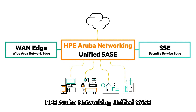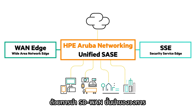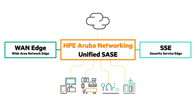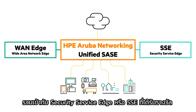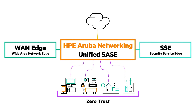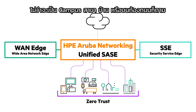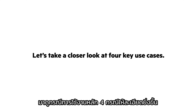HPE Aruba Networking Unified SASE takes SASE to the next level, bringing together our industry-leading SD-WAN with our award-winning Security Service Edge, or SSE, to extend Zero Trust security controls to all people and devices, no matter from where they connect — whether campus, branch, home, or on the road. Let's take a closer look at four key use cases.